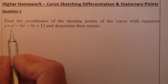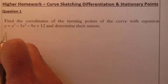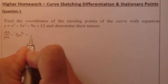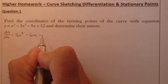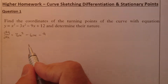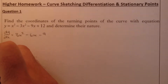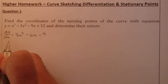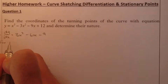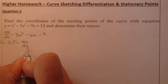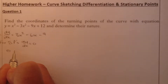So the first thing I'm going to do is differentiate the equation of the curve. When I differentiate, dy/dx is going to be equal to 3x squared minus 6x minus 9. From there I'm going to set my gradient equal to zero — dy/dx equals zero — which is my gradient formula. For stationary points, dy/dx equals zero, so I'm substituting zero in here.